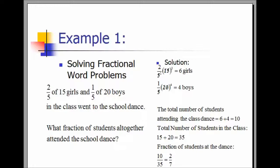The number of girls attending the dance is two-fifths of 15, which is six girls. The number of boys attending the dance is one-fifth of 20, which is four boys. Adding those two numbers together tells us that 10 students from the class attended the dance.